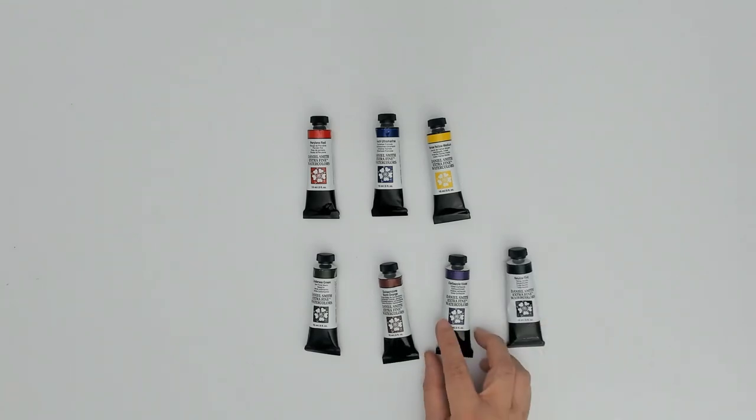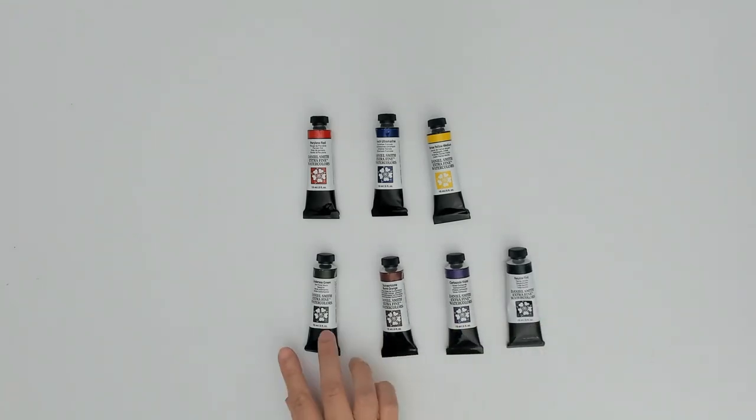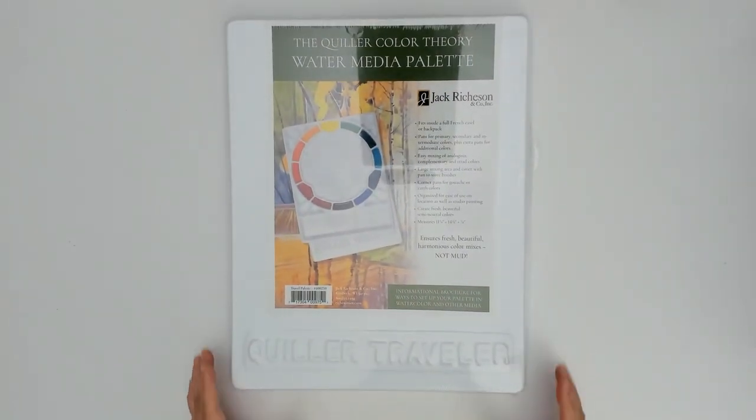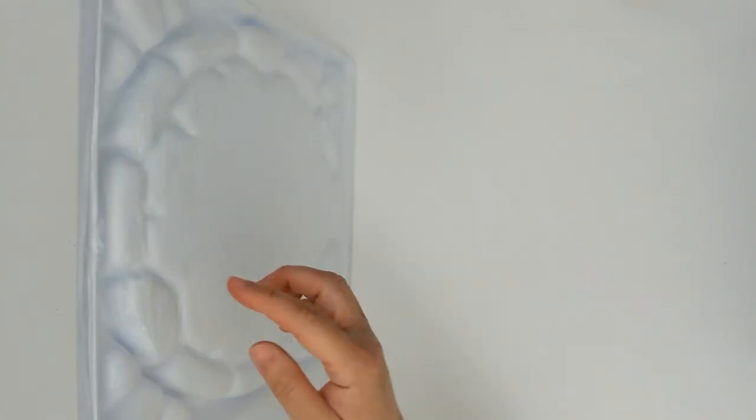In addition to these six colors, I'm also adding a black which is neutral tint. Let's open this palette up. This palette is around 11 inches by 14 inches so it's pretty large.